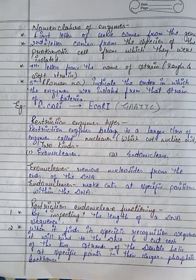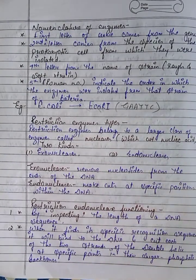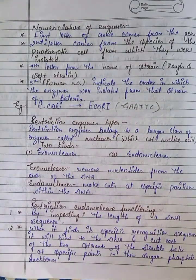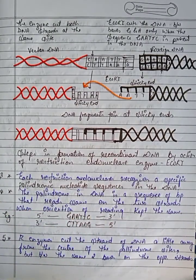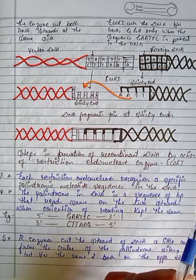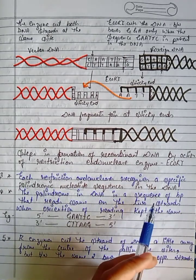When a restriction endonuclease finds a specific recognition sequence, it binds with the DNA. The DNA has two strands of the double helix, and the enzyme cuts at a specific point in each strand. Each restriction endonuclease recognizes a specific palindromic nucleotide sequence in the DNA.